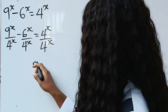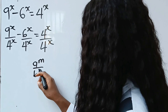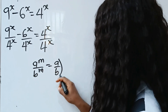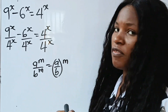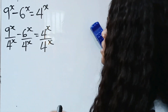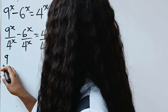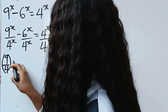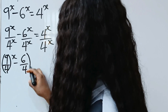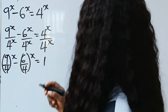Note that a to the power of m divided by b to the power of m can be written as a divided by b, everything raised to the power of m. That means we can rewrite this as 9 divided by 4 to the power of x, minus 6 divided by 4 to the power of x, is equal to 1.